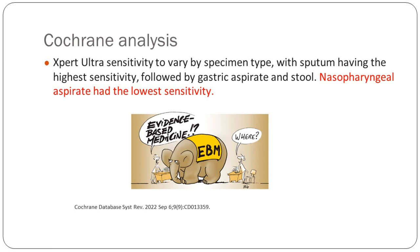Urine GeneXpert is only if we are suspecting renal TB — not otherwise used routinely in children. For HIV patients, LAM is used rather than GeneXpert on urine. We don't have data on urine GeneXpert in children; to try something experimental you can't recommend that. At the moment we only stick to sputum, gastric lavage, BAL, and gastric aspirate — nothing else.